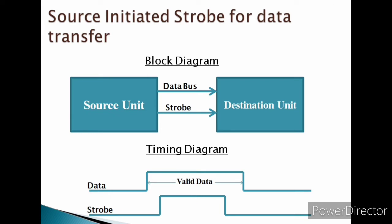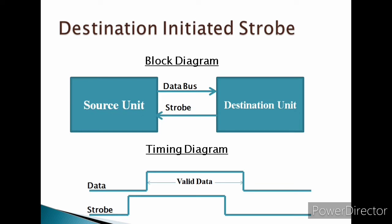This block diagram and timing diagram shows the destination-initiated strobe for data transfer. In this method, the destination unit activates a strobe pulse informing the source to provide the data. The source unit responds by placing the requested binary information on the bus. The data must be valid and remain on the bus long enough for the destination unit to accept it.